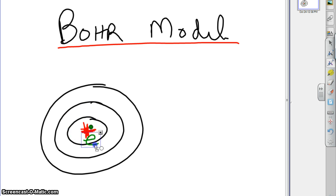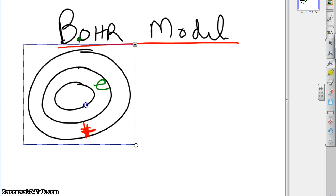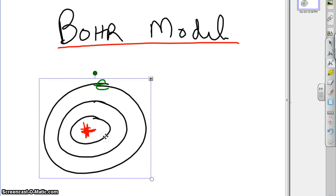As we learned yesterday, or whenever we watched that last video, the energy that an electron can have is limited. The electron can have that energy, or it can have that energy, or it can have that energy. Each one of these rings represents a different energy state, the farthest one out being the highest one.